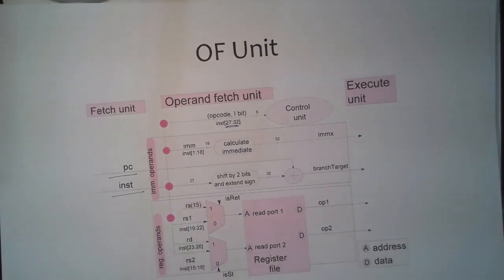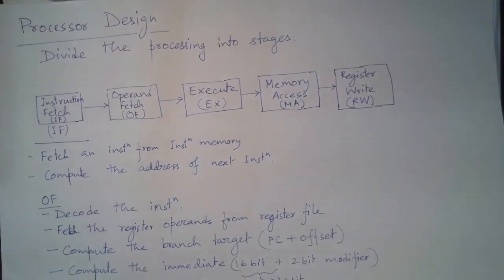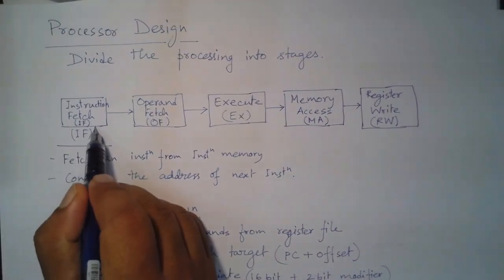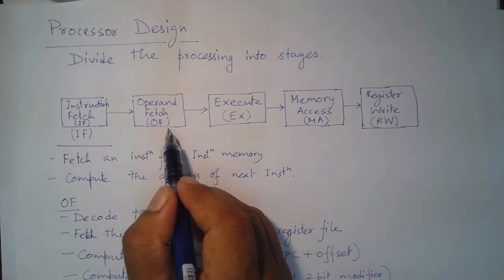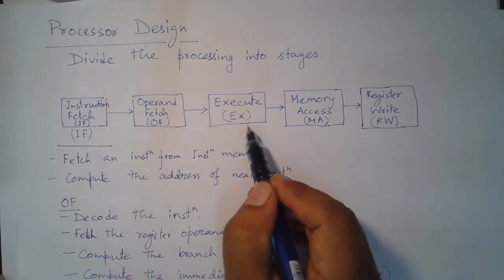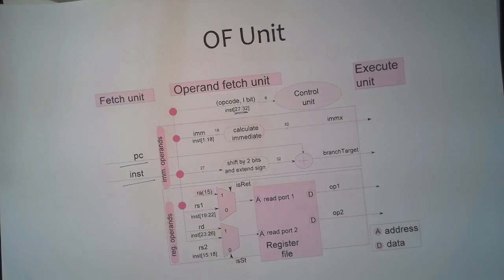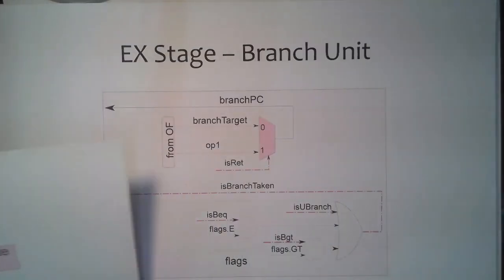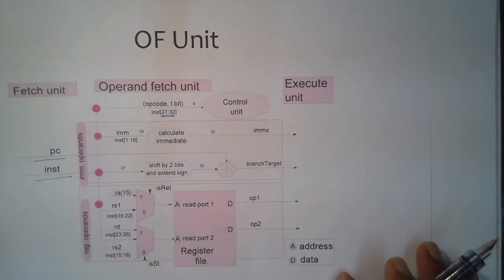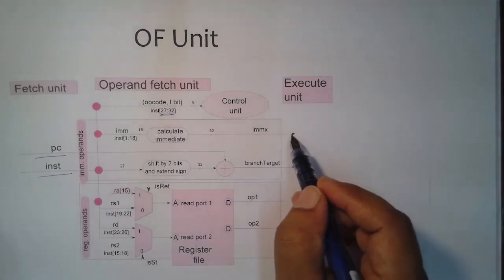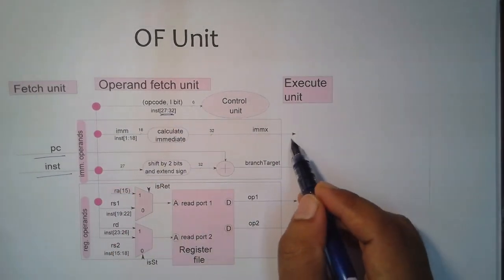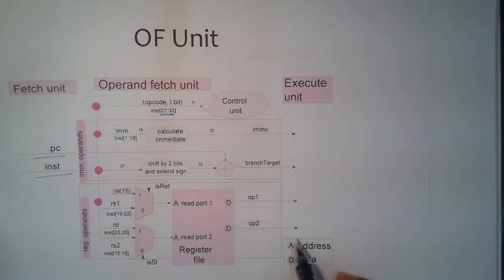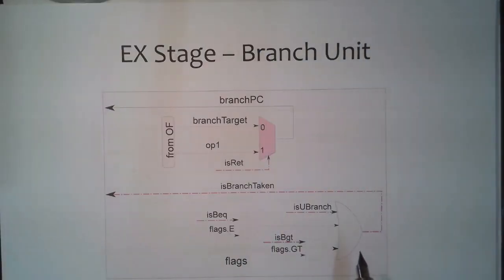Just to make sure we remember this diagram: we have discussed the instruction fetch unit and the operand fetch unit, and now we are moving to the execute stage. The inputs to the execute stage from the operand fetch unit are the immediate values, branch target, and the operand values.